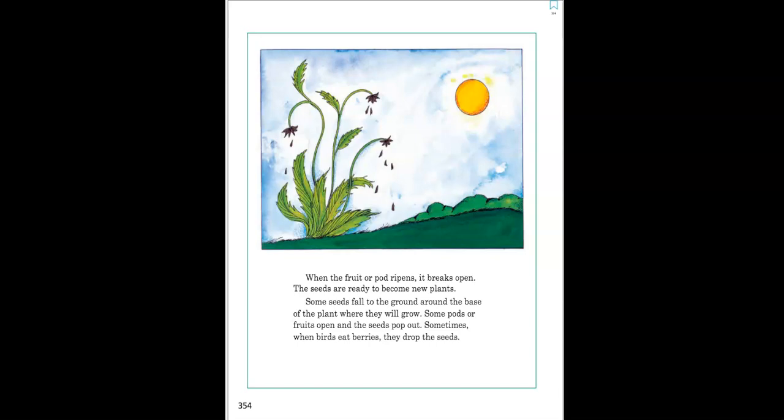Some seeds fall to the ground around the base of the plant where they will grow. Some pods or fruits open and the seeds pop out. Sometimes when birds eat berries, they drop the seeds.